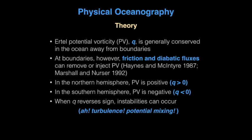In the northern hemisphere, potential vorticity is typically positive, and in the southern hemisphere it's typically negative. When this quantity, q, or potential vorticity, reverses sign, instabilities can occur, and that results in potential mixing of density.